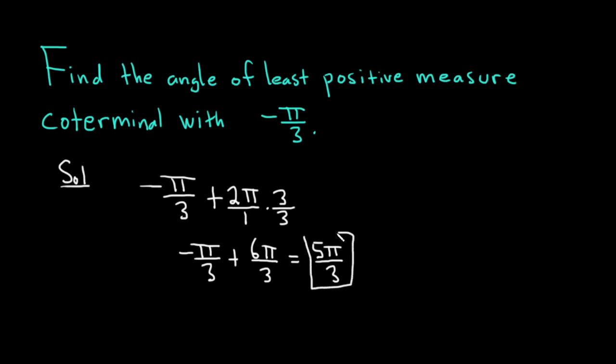And that would be the angle of least positive measure that's coterminal with this one. You could find another coterminal angle by adding 2 pi again, but it would be bigger. So this is the smallest one. Good luck.